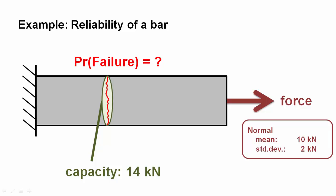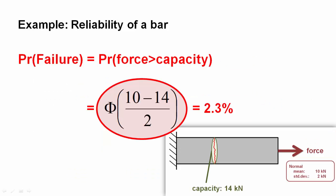We are interested in the reliability of this bar. To assess the reliability, we compute the probability of failure. The bar fails if the force exceeds the capacity. For this example, the probability of failure can be easily computed because the only random variable has a normal distribution. It can be evaluated by means of the CDF of the standard normal distribution: it is CDF of the mean of the force minus the capacity, divided by the standard deviation of the force. This gives 2.3%. A probability of failure of 2.3% is definitely too large to be accepted in practice, meaning we would need to increase the capacity of the bar.